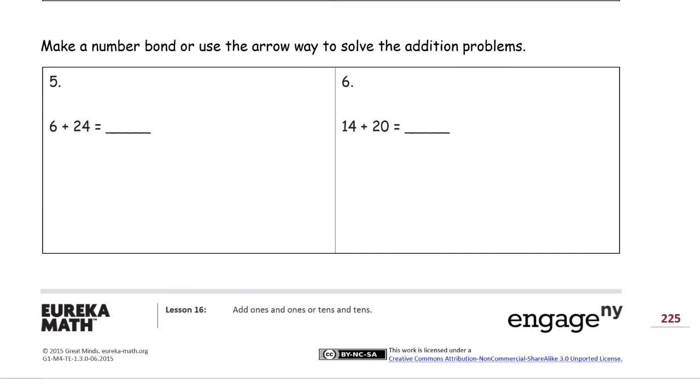Make a number bond or use the arrow way to solve the addition problems. Okay, so now we have a couple other choices to use. The number bond, I'm looking at this 24. And I see that 6, and I'm thinking that there's a 6 and a 4, and that makes 10. So that's what I want to do here, is I want to take this, I want to think of it as 20 and 4. Sorry, that looks like a 9. There. And I'm thinking 6 plus 4 equals 10. And the 20 plus the 10, 30.